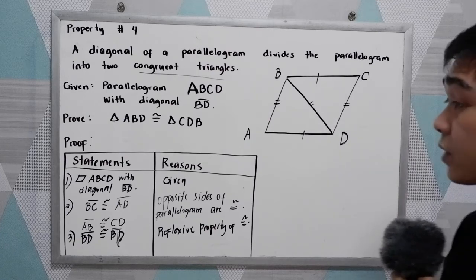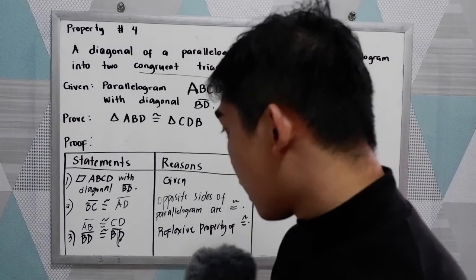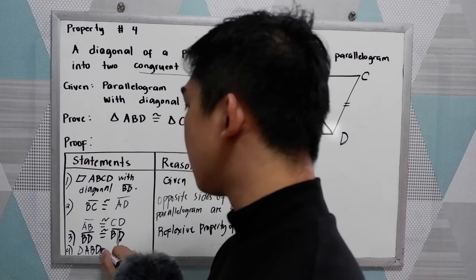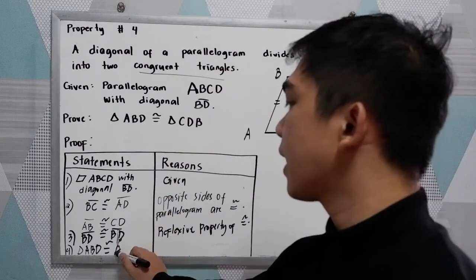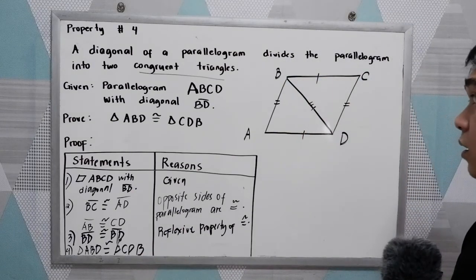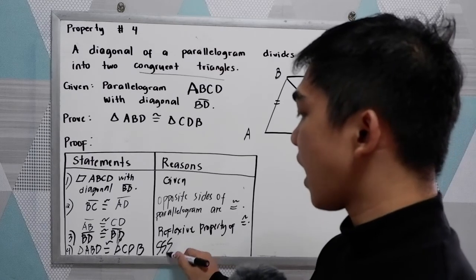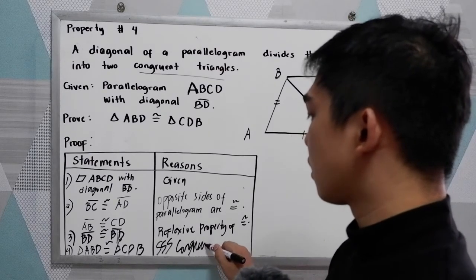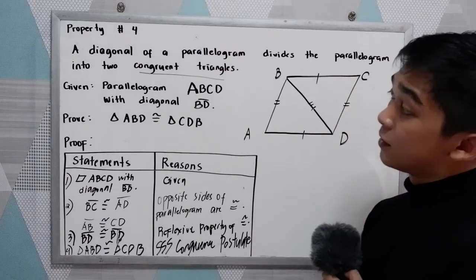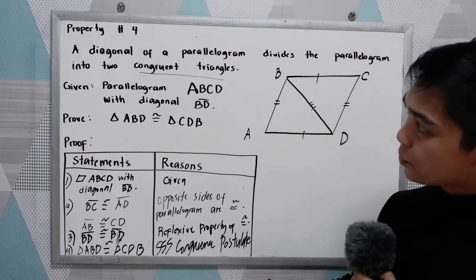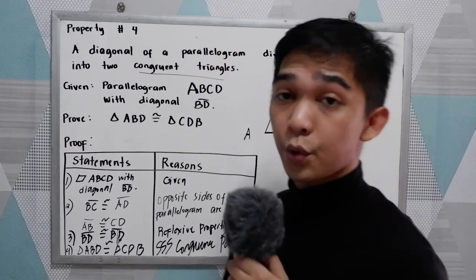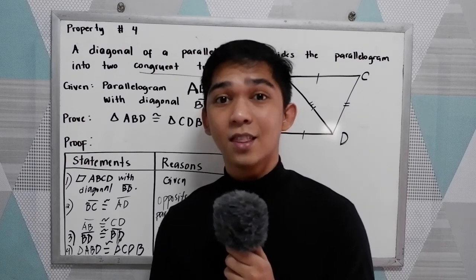Reflexive property of congruence — you learned that when you were in grade 8. And last, we can now conclude that triangle ABD is congruent to triangle CDB. That is using the SSS congruence postulate. And we're now done in proving that a diagonal of a parallelogram divides the parallelogram into two congruent triangles. That is our property number four.